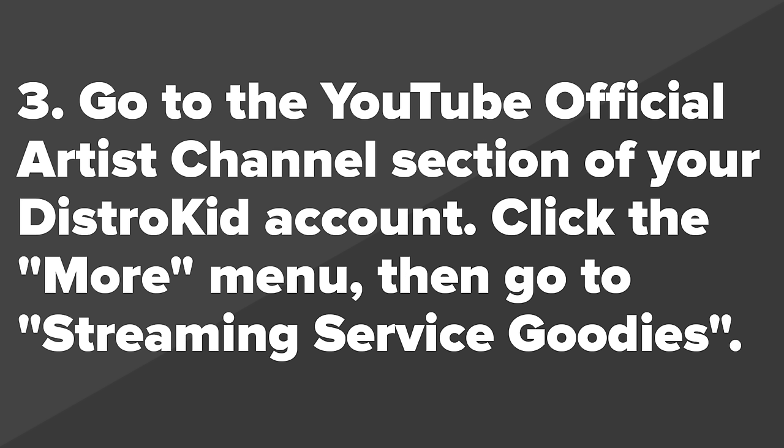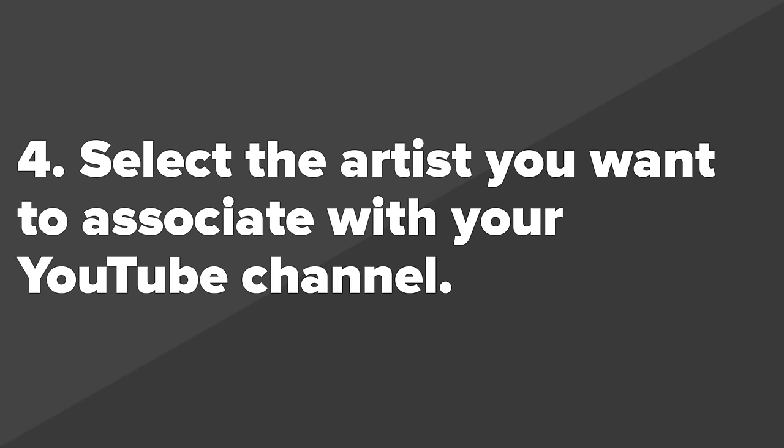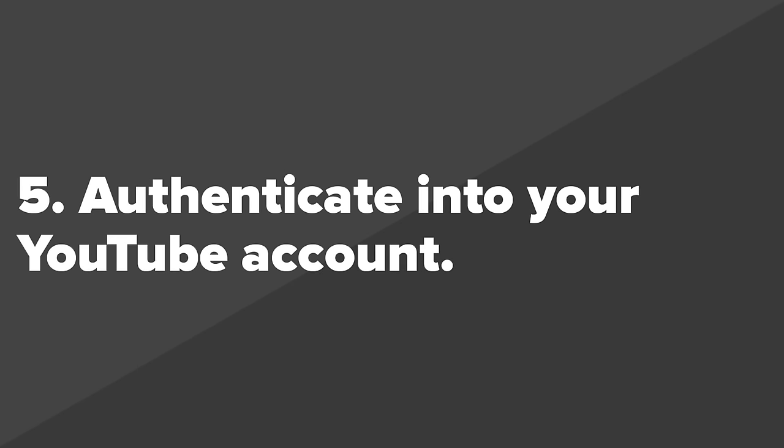Step number three is going to the YouTube official artist channel section of your DistroKid account. Click the More menu, then go to Streaming Service Goodies. Step four, select the artist you want to associate with your YouTube channel. Step five, authenticate into your YouTube account. Step six, claim your channel.